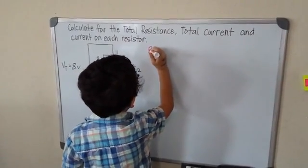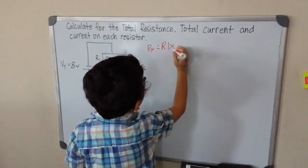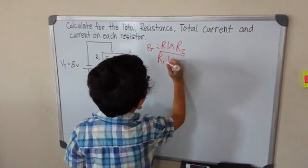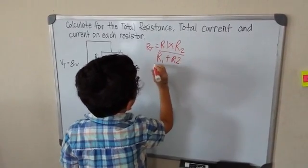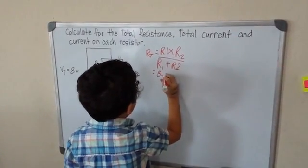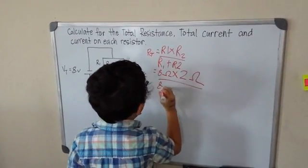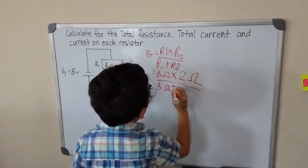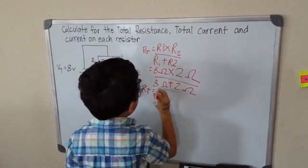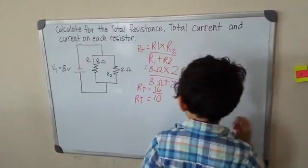Okay, so Rt equals R1 times R2 over R1 plus R2. R1 is 8 volts times 2 volts divided by 8 volts. So what's our total resistance? 16 over 10. Now what's our total resistance? 16 divided by 10.